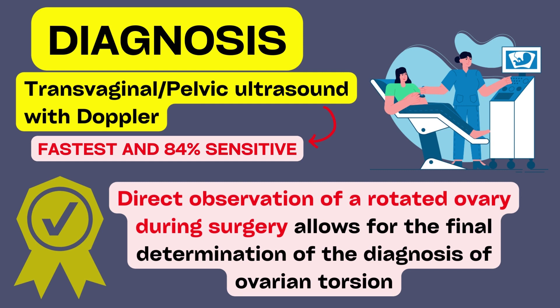CT and MRI are not typically utilized to detect ovarian torsion but to rule out other abdominal pathologies like acute appendicitis. Direct observation of a rotated ovary during surgery allows for the final determination of the diagnosis. For this reason, the patient must undergo surgical assessment if clinical suspicion persists despite reasonably normal lab results and ultrasound imaging.